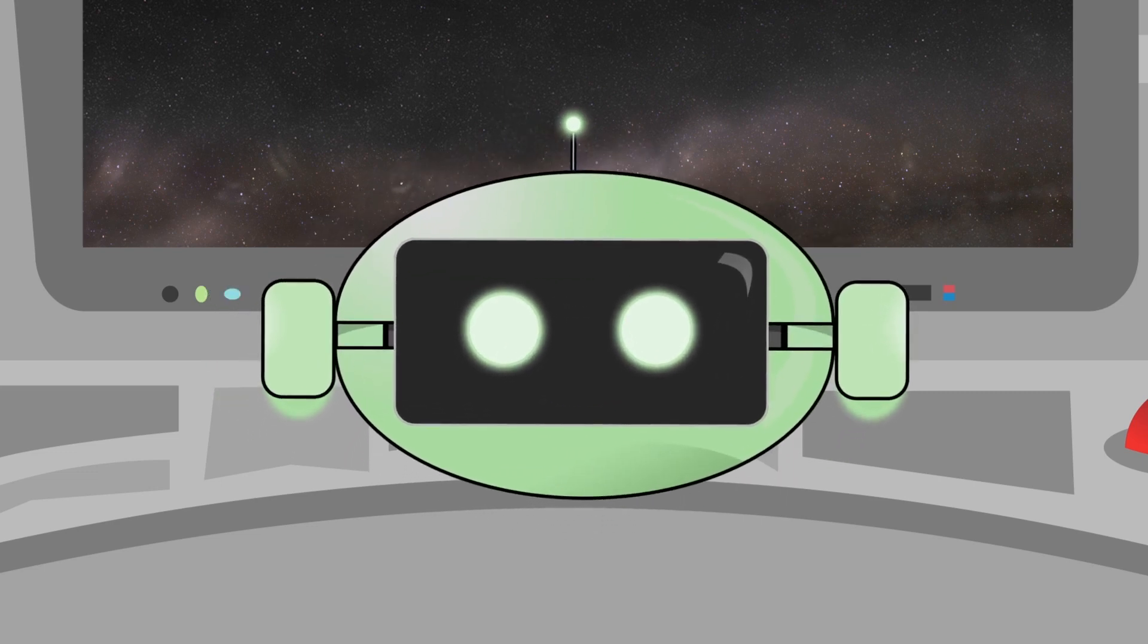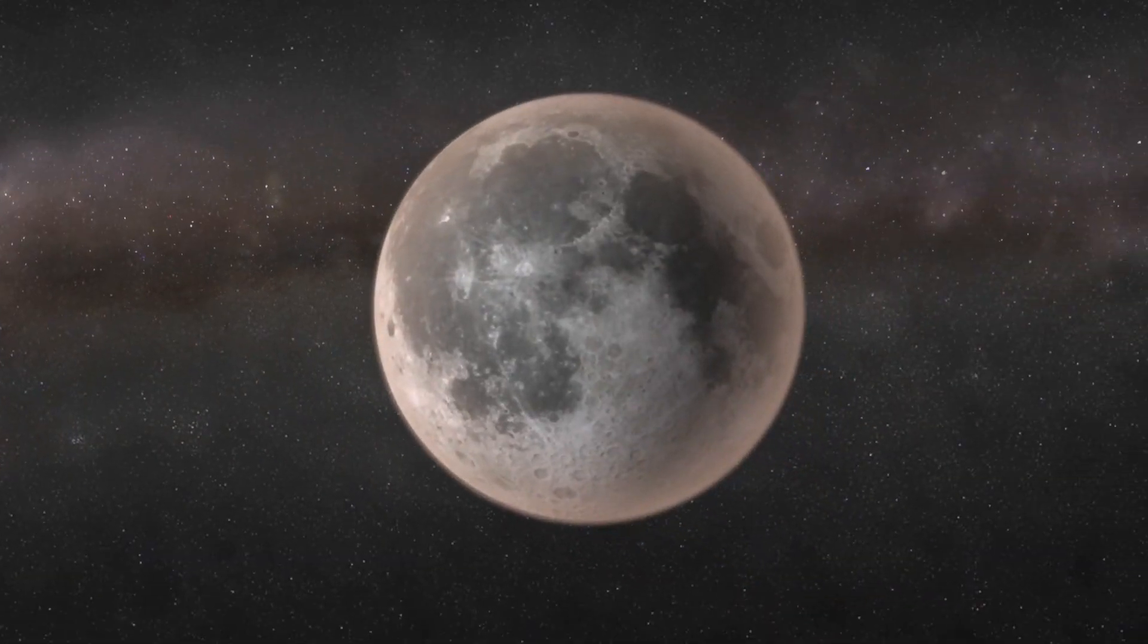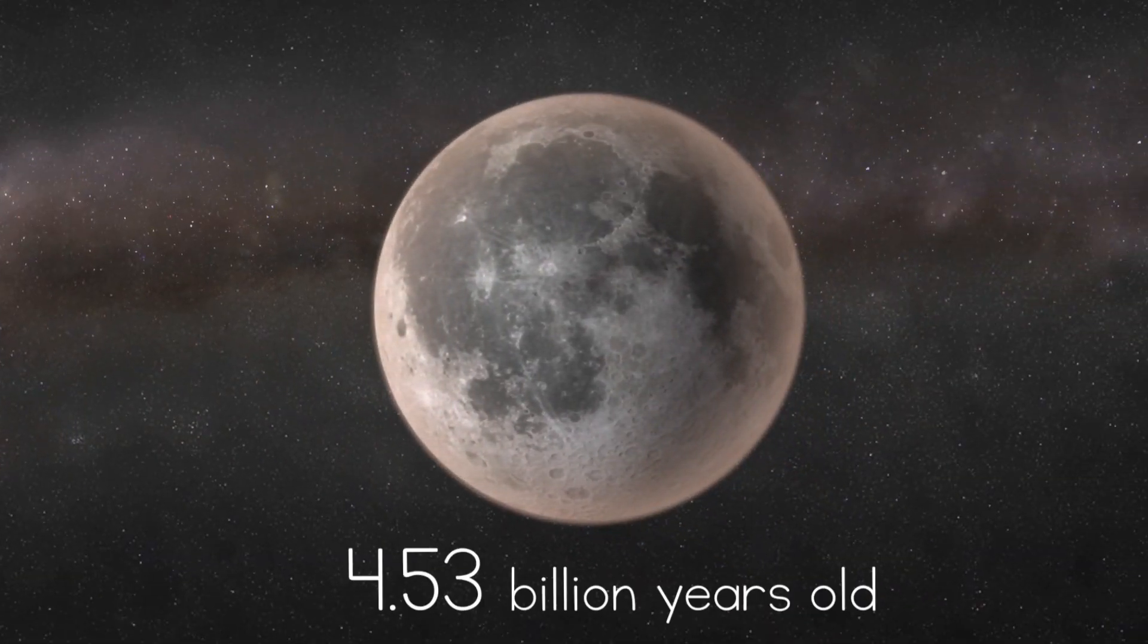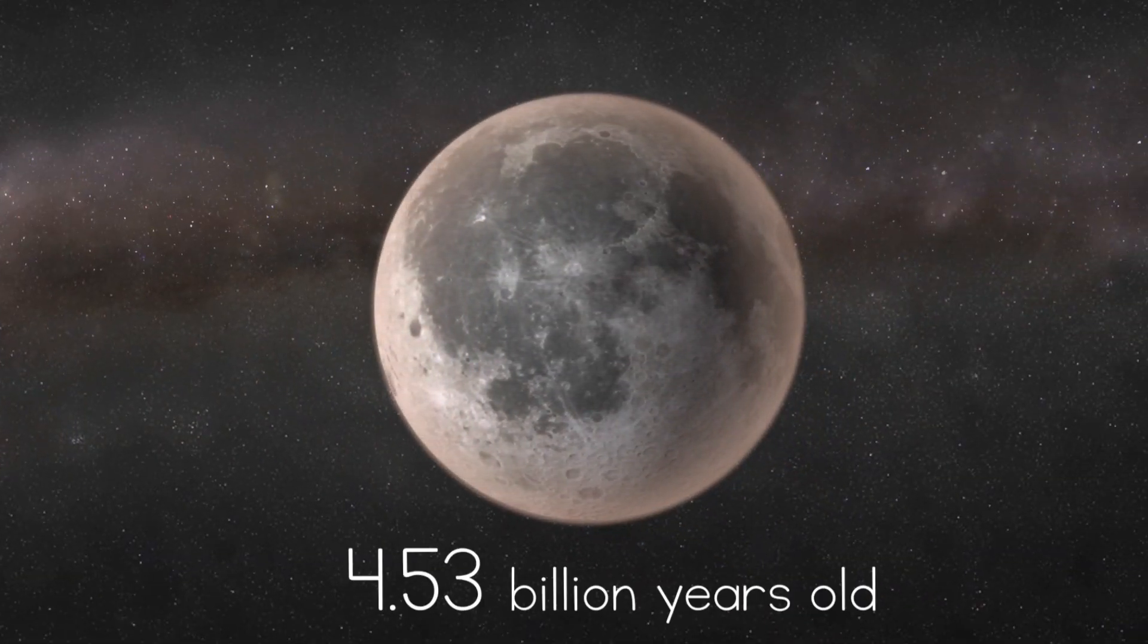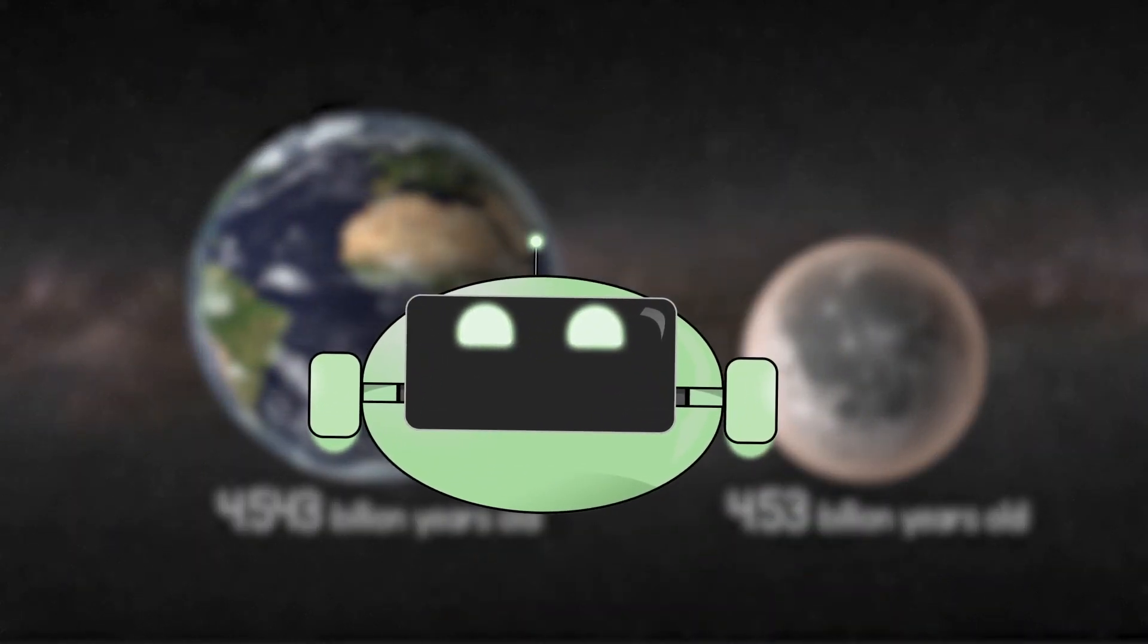Very, very old? I heard the Earth is over 4 billion years old. Is the moon that old too? About. It's estimated to be 4.53 billion years old, which is about the same age as our Earth.